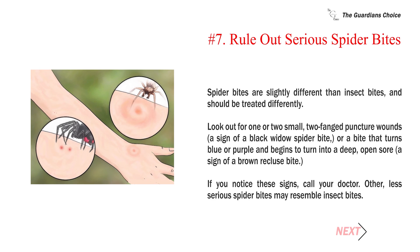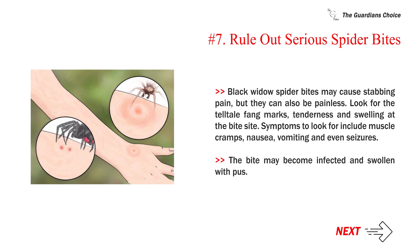Number 7: Rule out serious spider bites. Spider bites are slightly different than insect bites, and should be treated differently. Look out for one or two small, two-fang puncture wounds — a sign of a black widow spider bite — or a bite that turns blue or purple and begins to turn into a deep, open sore, a sign of a brown recluse bite. If you notice these signs, call your doctor. Other, less serious spider bites may resemble insect bites. Black widow spider bites may cause stabbing pain, but they can also be painless. Look for the telltale fang marks, tenderness, and swelling at the bite site. Symptoms include muscle cramps, nausea, vomiting, and even seizures. The bite may become infected and swollen with pus.